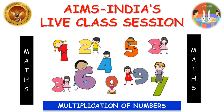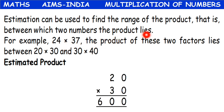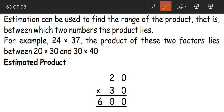Hi children, welcome to AIMS India's online classes. With today's class we'll hopefully wind up multiplication of numbers. We learned yesterday about estimation. Estimation can be used to find the range of product — that is, between which two numbers the product lies. We rounded off the factors to the nearest tens or hundreds and then multiplied them to get our estimated product.